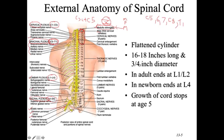The spinal cord ends at L1-L2 in adults, but when a baby is born it extends down to L4. As the child grows taller, the spinal cord pulls up, with cord growth stopping at about age five. There is no plexus in the thoracic region — only intercostal nerves, which travel between the ribs alongside the internal and external intercostal muscles for inspiration and expiration.